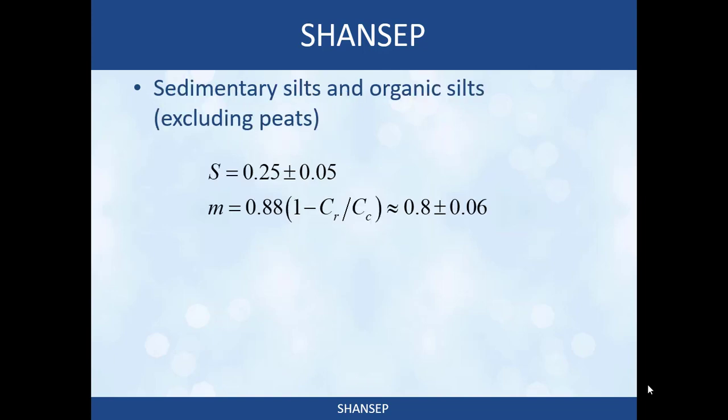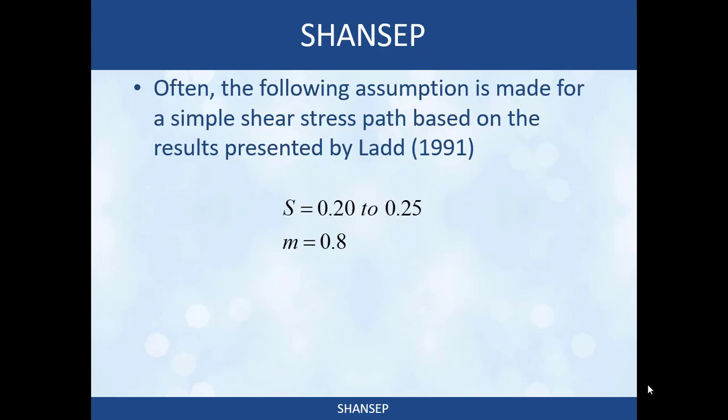For sedimentary silts and organic silts — not peats, but silts with some organic content — Ladd found S equals 0.25 plus or minus 0.05 for direct simple shear, and M equals 0.88 times (1 minus CR over CC), approximately 0.80 plus or minus 0.06. Based on the aggregate of all these results, people commonly assume S is somewhere in the range of 0.20 to 0.25 — higher for high-plasticity soils, lower for low-plasticity — and M equals approximately 0.8. These are common assumptions in practice when lab tests can't be run, but you should be aware they carry uncertainty.